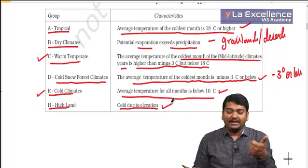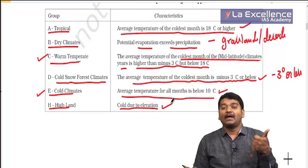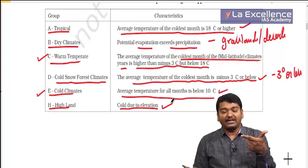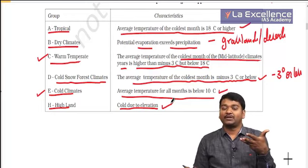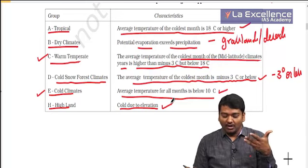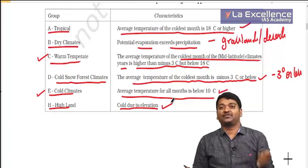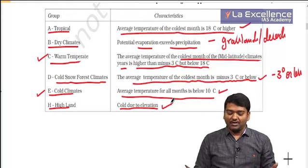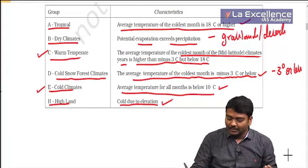To summarize: tropical means coldest month is 18 degrees and above. Warm temperate is 18 to minus 3. Cool temperate is minus 3 and below but has summer. Throughout the year if temperature is around 10 degrees Celsius, we call it cold climate. With elevation, if temperature drops, we call it highland climate.